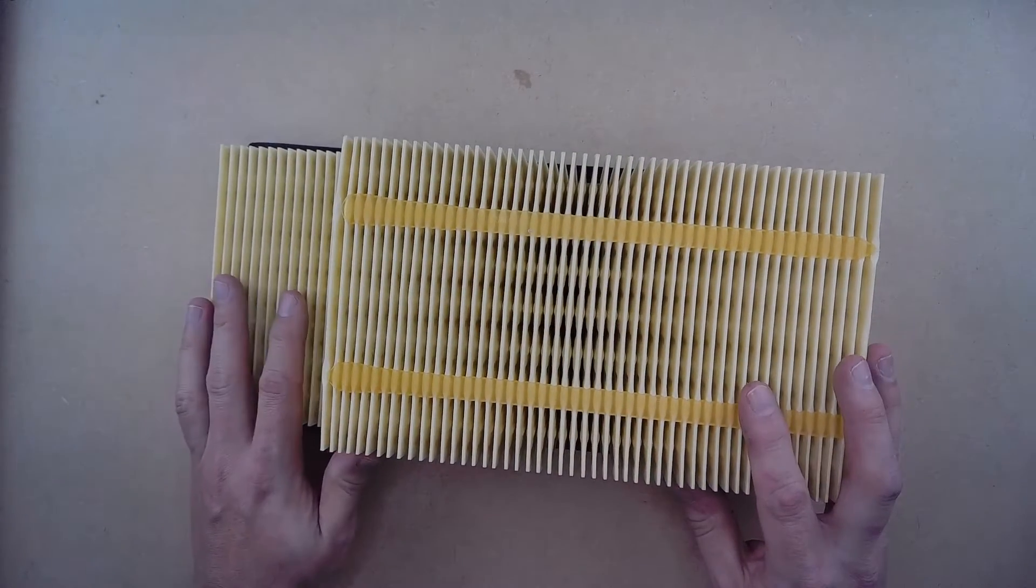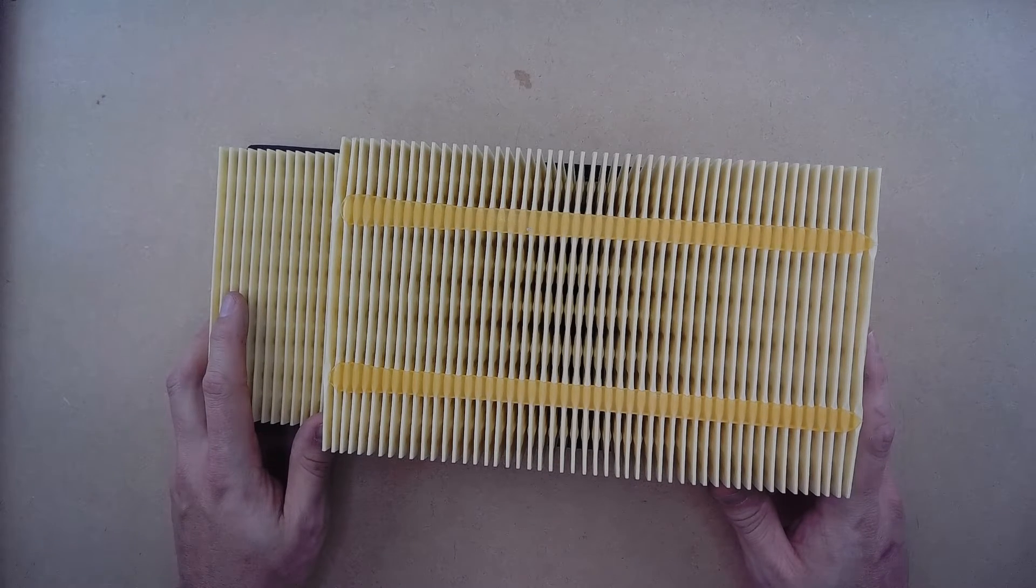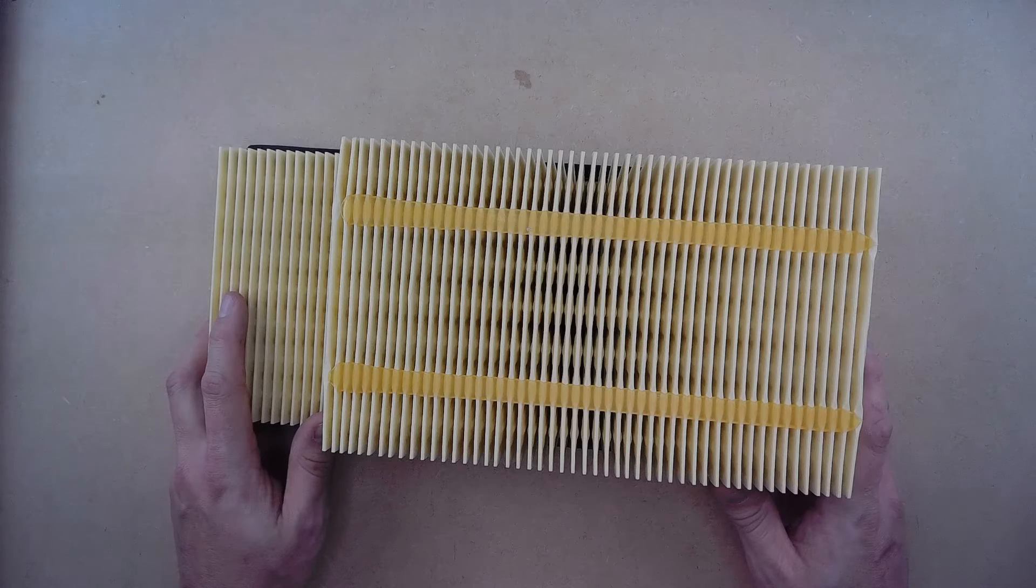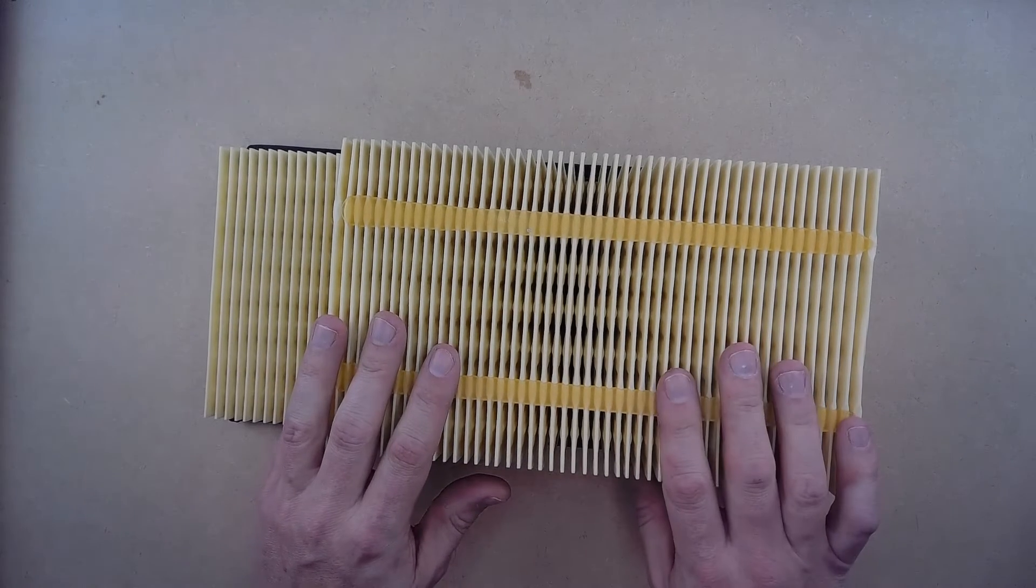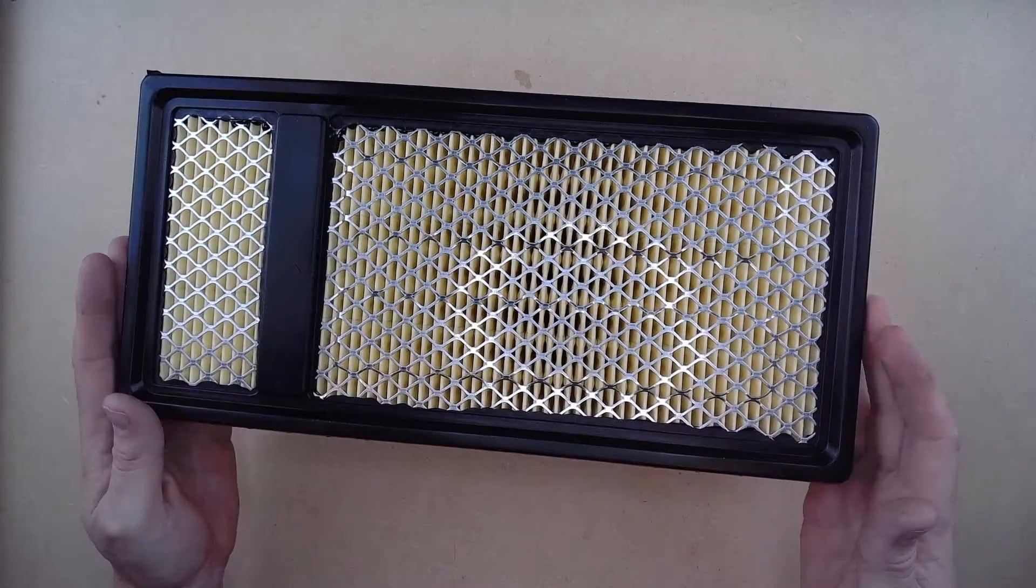Installation of a replacement air filter in your 2011 to 2016 Super Duty is very easy. Pop open your hood, locate your air box, unlatch, lift up, and then remove the old filter.